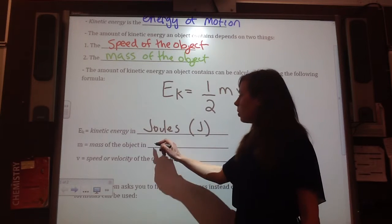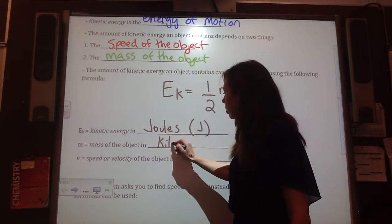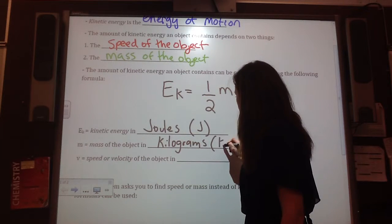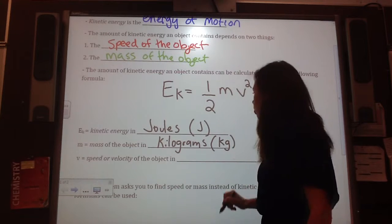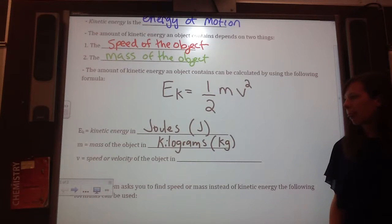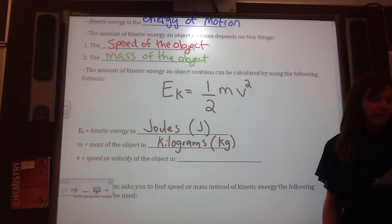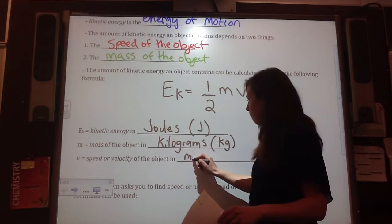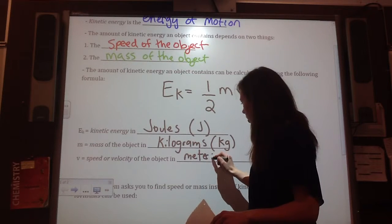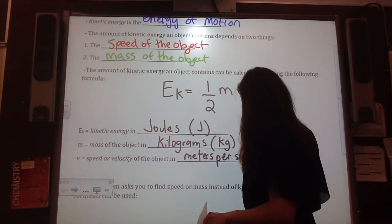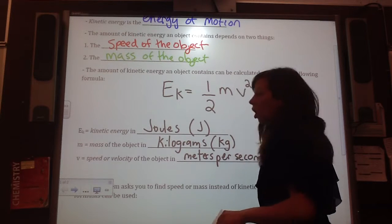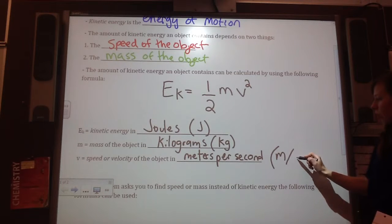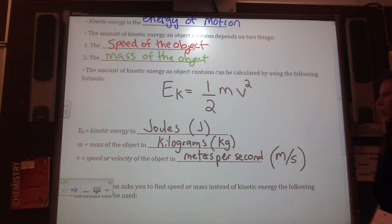m is the mass of the object in kilograms, and we show that with a k, little k, and a little g, kilograms. Speed or velocity of the object is measured in meters per second, just like always, and we represent it with an m over s, for meters per second.